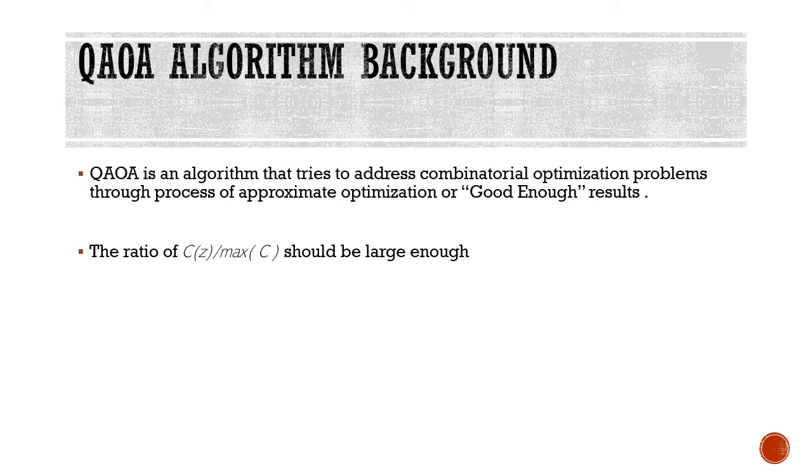QAOA tries to find good enough results. That means it tries to get the ratio of C(z) to max of C(z) to be large enough so that we obtain a good enough result or a good enough optimization.